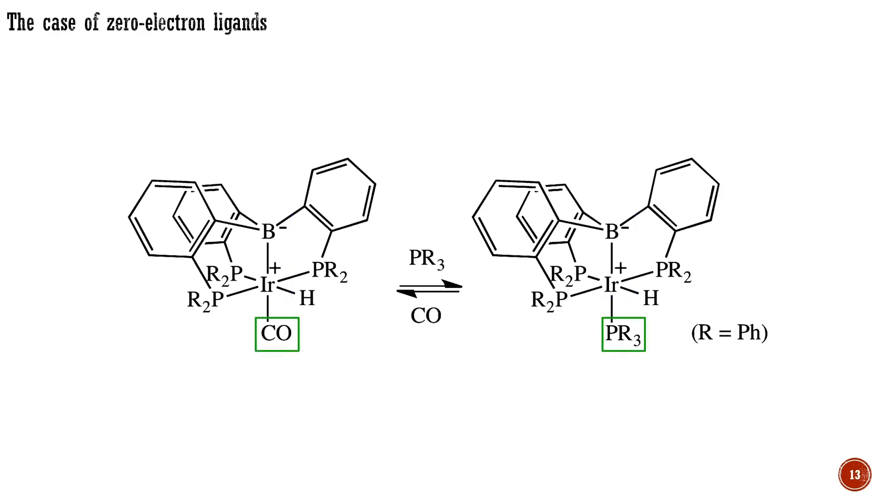In this ligand substitution reaction, carbon monoxide leaves the complex easily due to the presence of a zero-electron ligand, which inhibits backbonding.